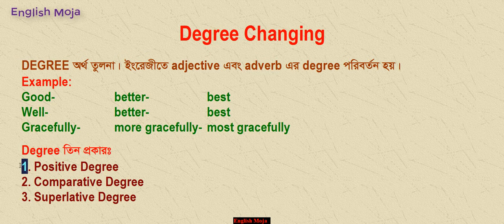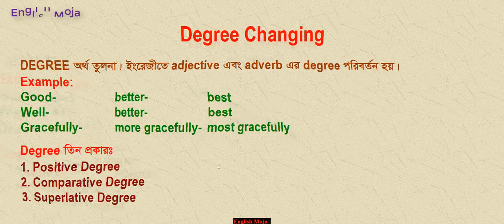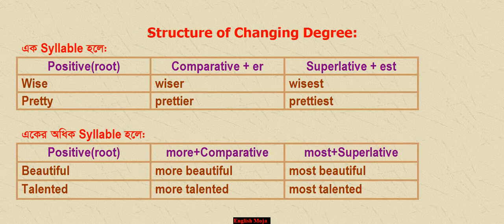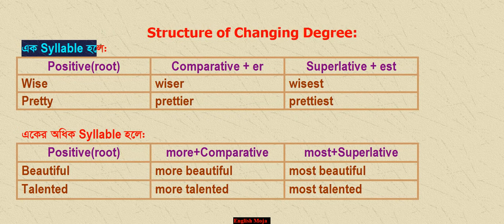Number one: positive degree. Number two: comparative degree. And number three: superlative degree. We will do the structure of the changing degree. The structure of the changing degree is very easy.